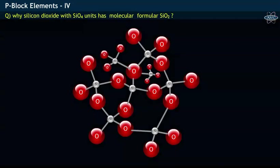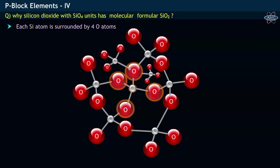Let us explain why silicon dioxide having SiO4 units has a molecular formula of SiO2. From the structure of silica shown, it may be noticed that each silicon atom is surrounded by four oxygen atoms.